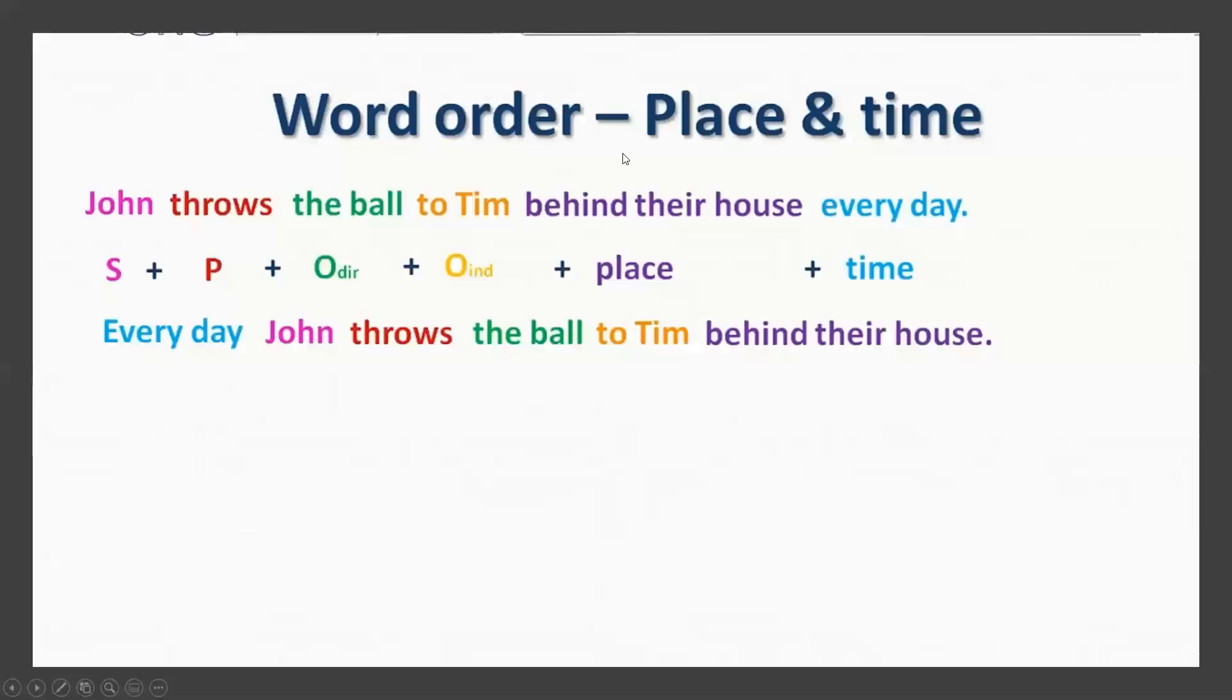The word order in a simple sentence is the following one. We begin by the subject, then the verb, then the direct or indirect object, we can change this position, and after that you have the place, and at the end, the time. This is the word order, but if you want to make more emphasis in the time, for example, you can begin by the expression of time. If you follow the word order, your sentences will be grammatically correct.